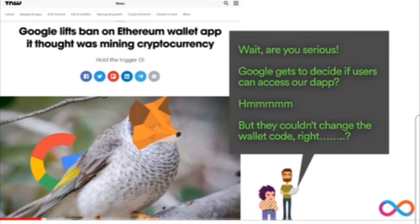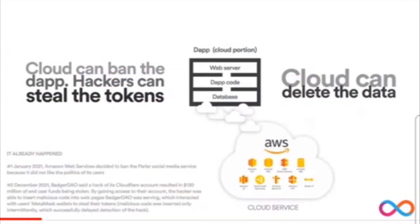Let's look at what Dominic was talking about with data storing. About 99% of DApps or centralized services are really running on the cloud — the data's in the database and the web server serves the content, with some DApp code there. The problem is the cloud can ban the DApp, and we've seen that with Parler. It wasn't a DApp, it was a social media site, but Amazon Web Services didn't like its political leanings and banned it.